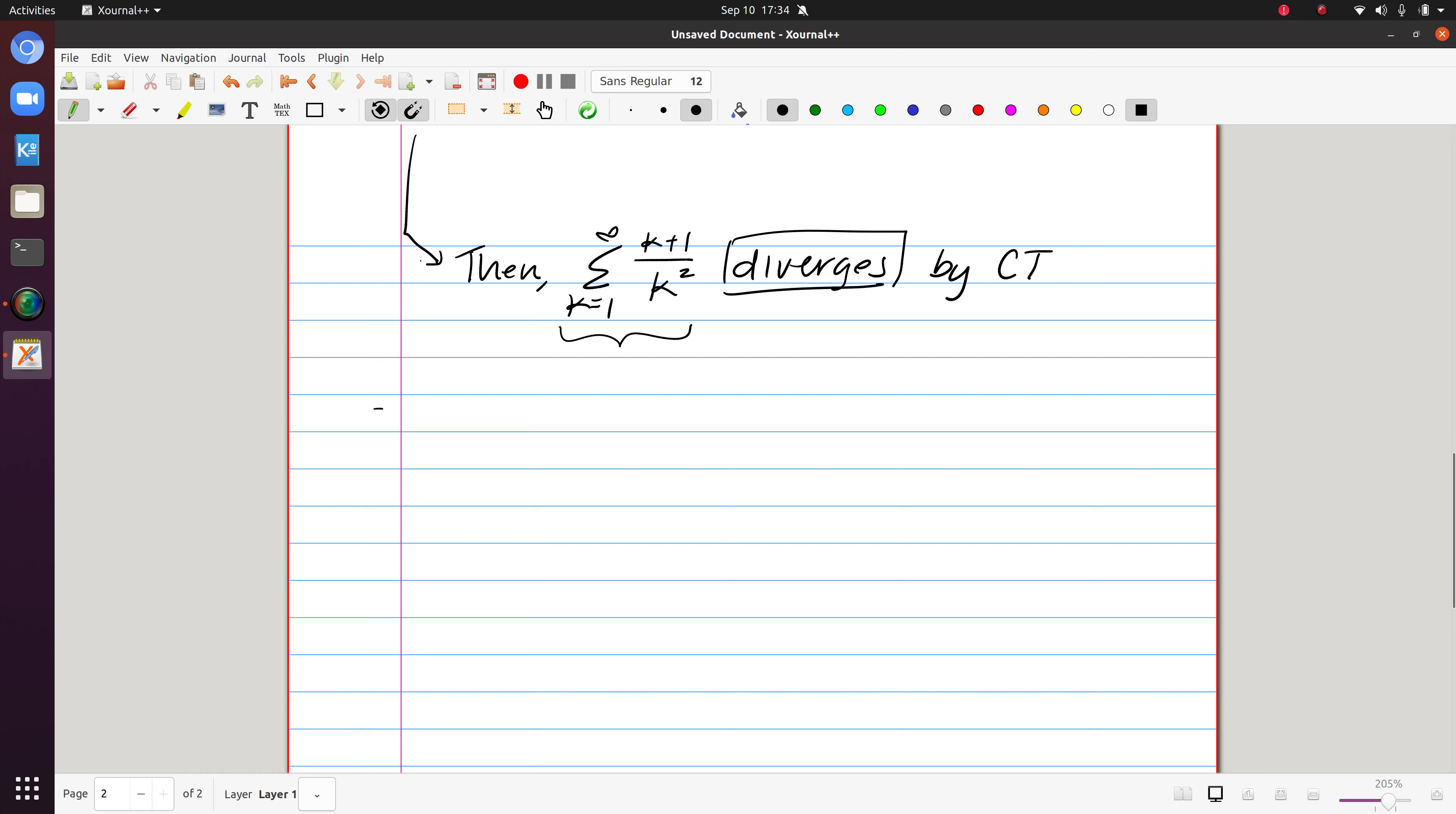In general, I'll point out that when a sub k is essentially a rational function in k, so a polynomial in k divided by a polynomial in k,